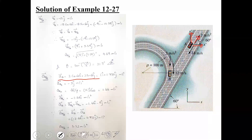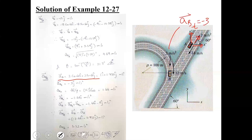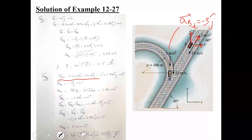As for the acceleration of car B, the 3 meters per second squared is the tangential component. Since it is directed towards the negative y-axis, AB tangential is minus 3j meters per second squared.